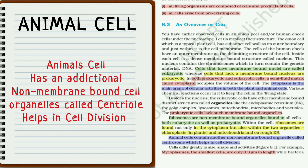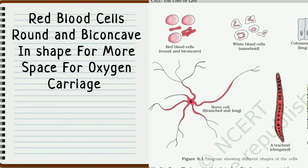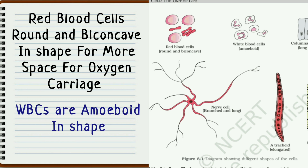The size of mycoplasma is only 0.3 micrometers in length, while the size of a bacterium is 3 to 5 micrometers. Looking at this picture, the shape of red blood cells is round and biconcave. They have such a shape because the surface area increases for round surfaces, allowing more oxygen to be stored in them. White blood cells are amoeboid in nature, which helps them engulf foreign particles.